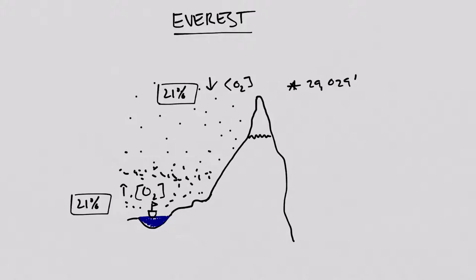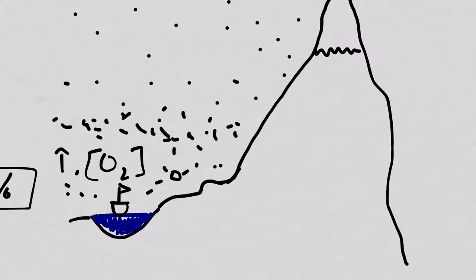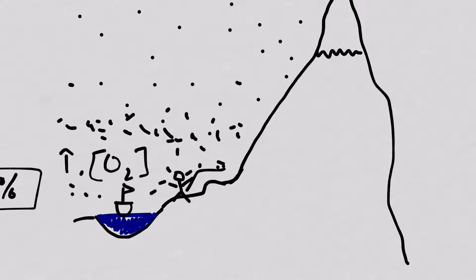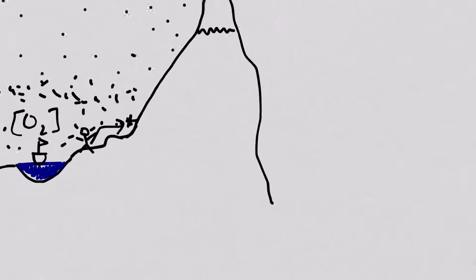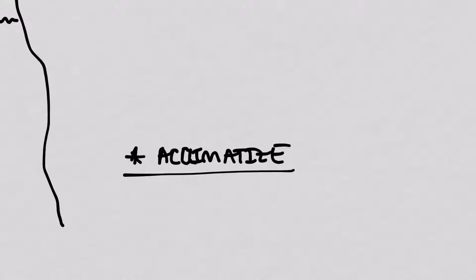So what do people do when they're climbing mountains? Well, the first thing that they do is they go up slowly. This person is going to start out here and go a little bit up the mountain and stop and hang out for a little bit. And what's happening here as they stop is that they're beginning to acclimatize. Acclimatizing means that their bodies are actually changing and responding to this deprivation of oxygen.